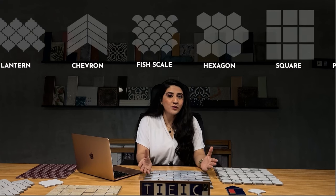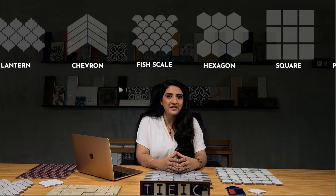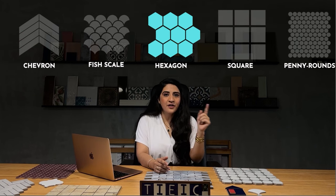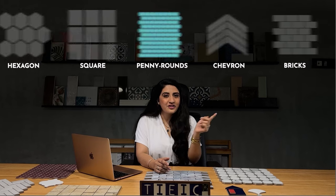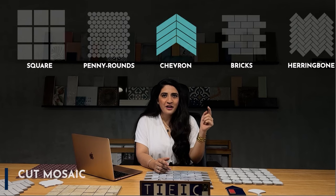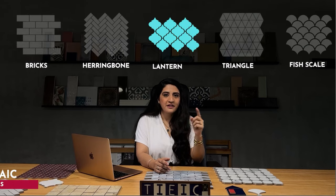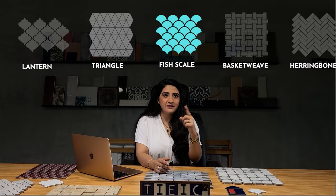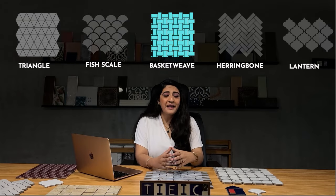Now you have an idea about what ceramic mosaics are. Let's quickly review the most popular shapes of ceramic mosaic: hexagon, square, penny round, chevron, bricks, herringbone, lantern, triangle, fish scale, basket wheel, and many more.